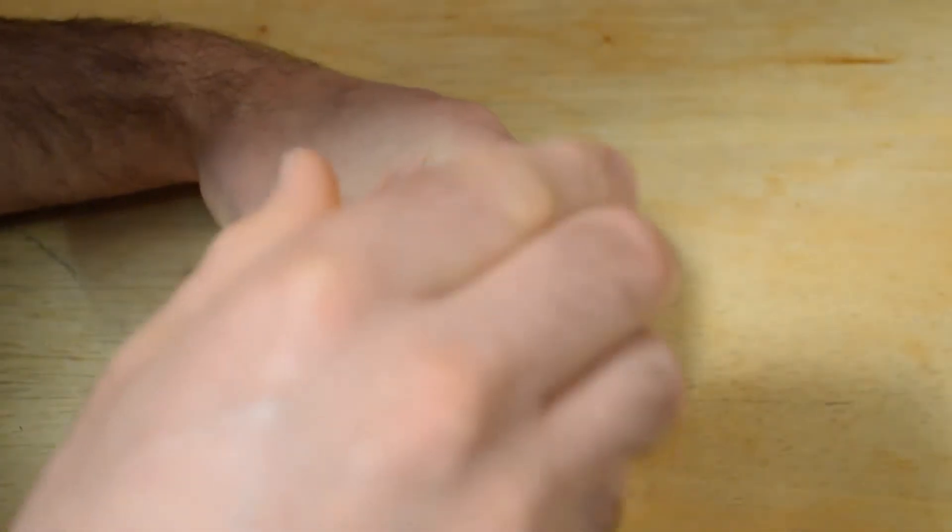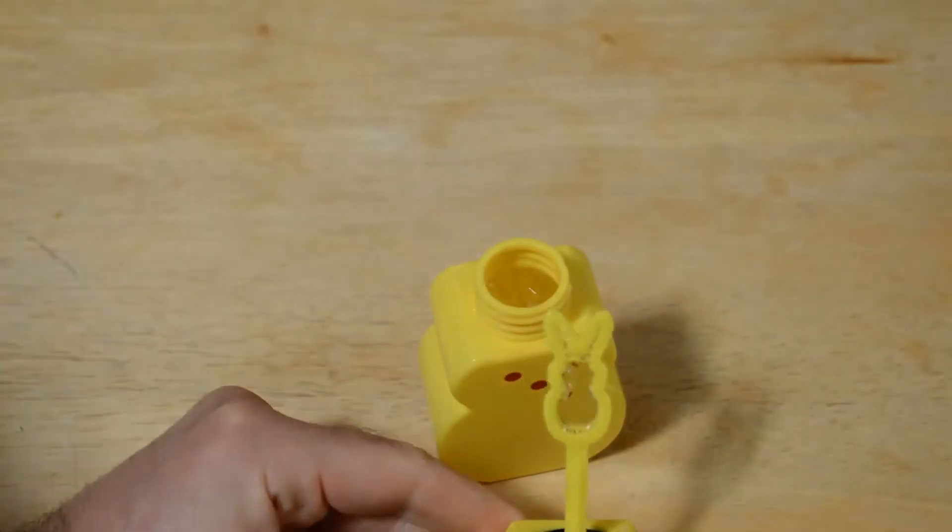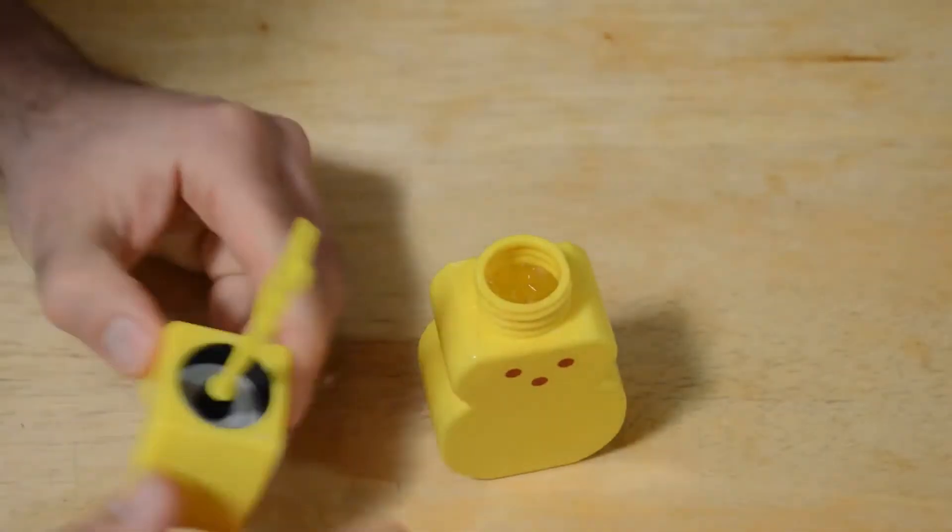Alright, so you unscrew the cap. Here we go, testing it out—the Peep. It's a little bubble blower in the shape of a little bunny.